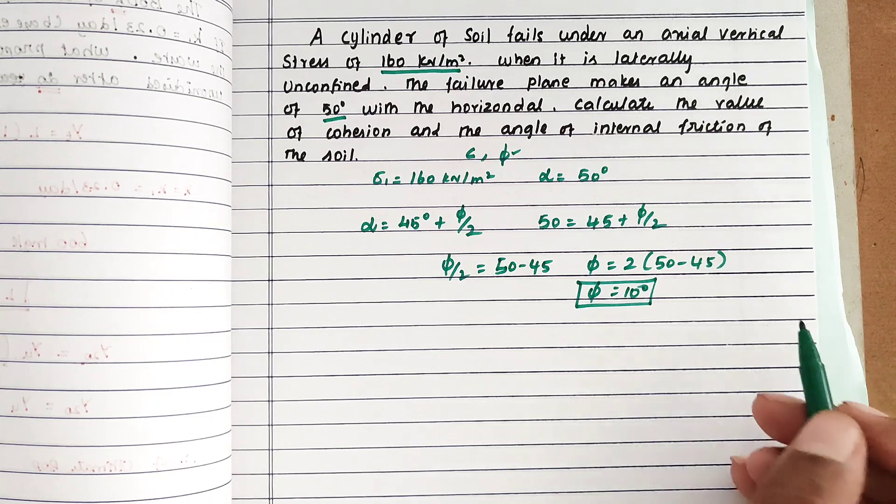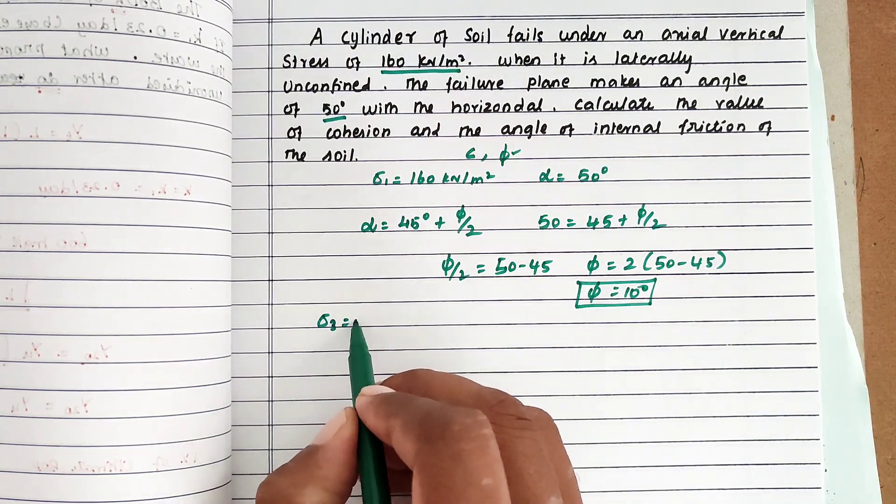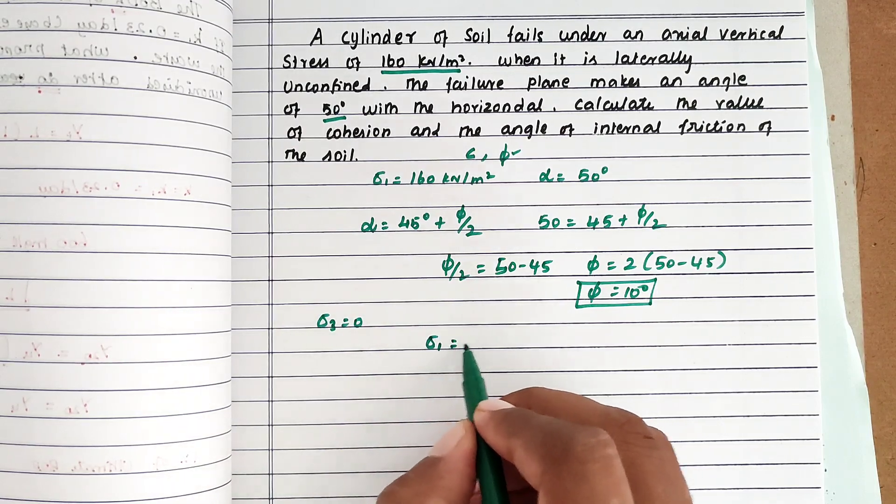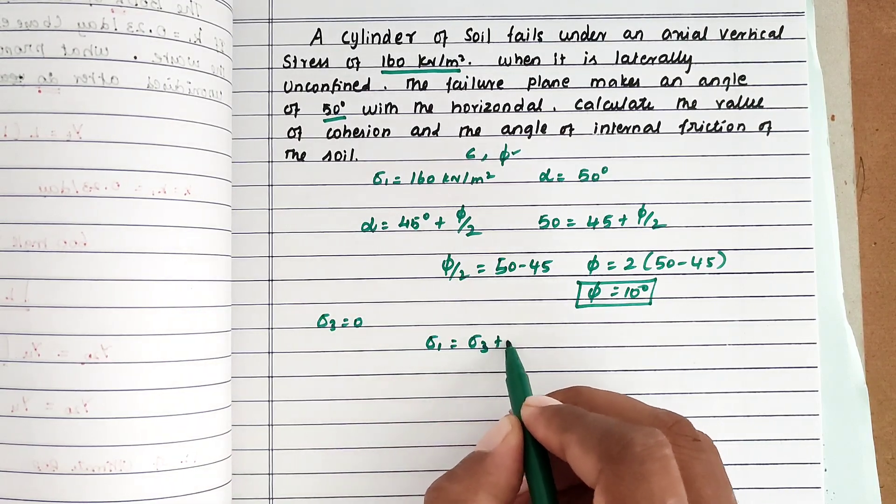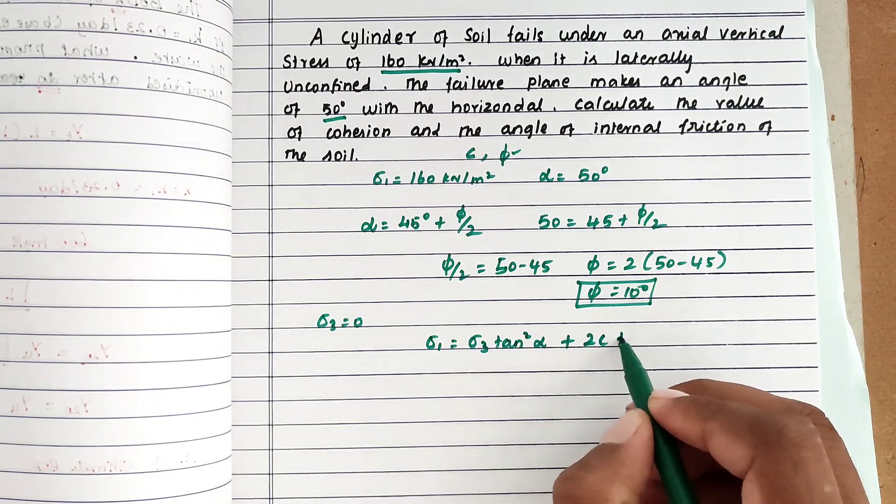Next, when the sample is unconfined, sigma 3 equals 0. The formula is: sigma 1 equals sigma 3 tan squared alpha plus 2c tan alpha.